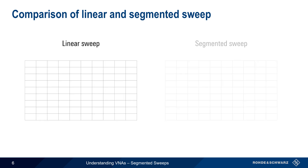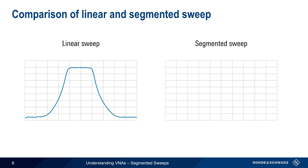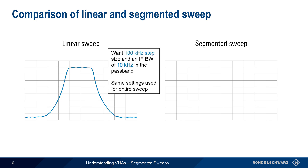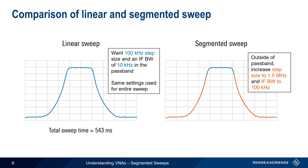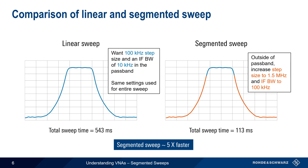Let's compare a linear and a segmented sweep. In this example, we want to measure the passband of this filter with a 100 kHz step size and an IF bandwidth of 10 kHz. In a linear sweep, these parameters would apply to the entire sweep, and the resulting sweep time would be 543 ms. We could, however, create a sweep with three segments, in which the step size outside of the passband is increased to 1.5 MHz, and the IF bandwidth is set to 100 kHz. In this case, the total sweep time is only 113 ms. So in this example, the segmented sweep is almost 5 times faster, with no loss of accuracy or resolution in the passband region of our filter.